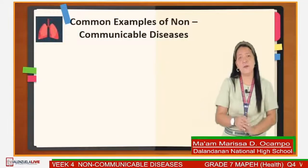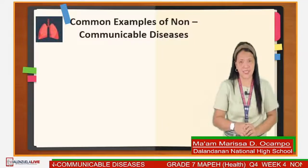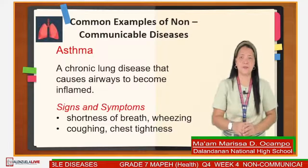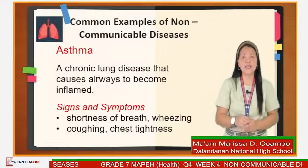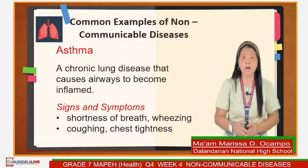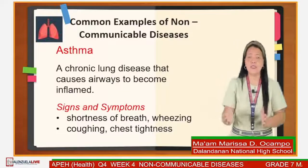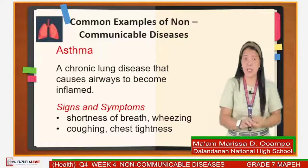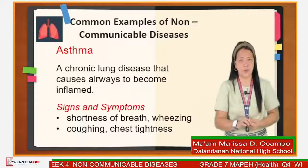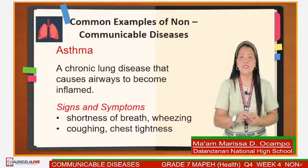Here are some common examples of non-communicable diseases. Asthma is a chronic lung disease that causes airways to become inflamed, meaning they swell and produce lots of thick mucus. Signs and symptoms include shortness of breath, wheezing, coughing, and chest tightness.